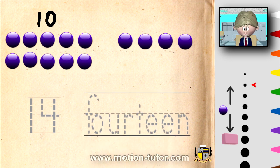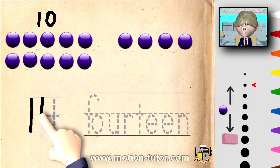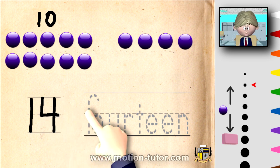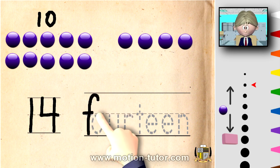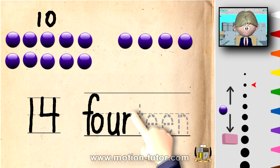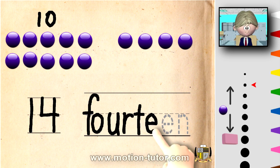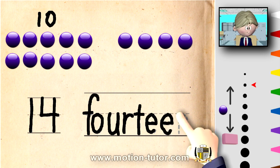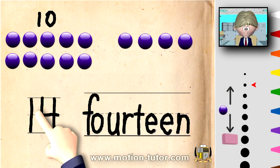So let's write the number fourteen. It's a one and a four. And you spell it F, O, U, R, T, E, E, N. Fourteen. Ten and four is fourteen.